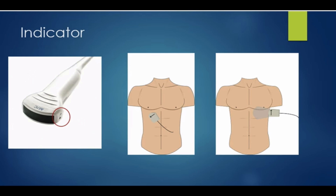The ultrasound probe has an indicator notch or selection marker on one side. By convention, we hold the probe with the indicator pointing to the patient's right or to the patient's head. This way, we can standardize the orientation of all of the images that we acquire.